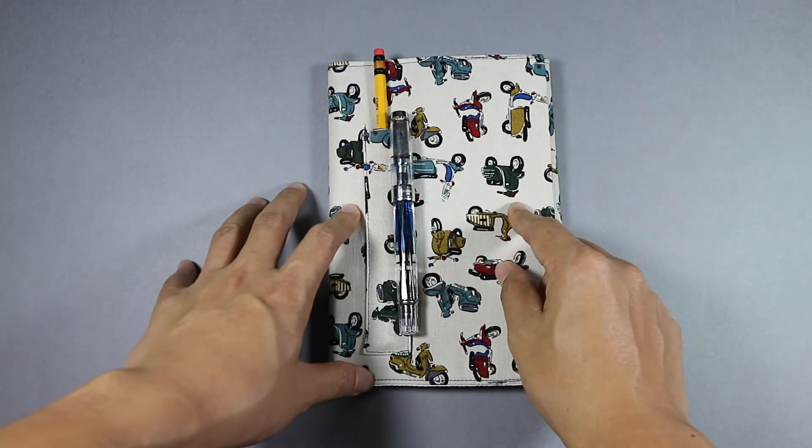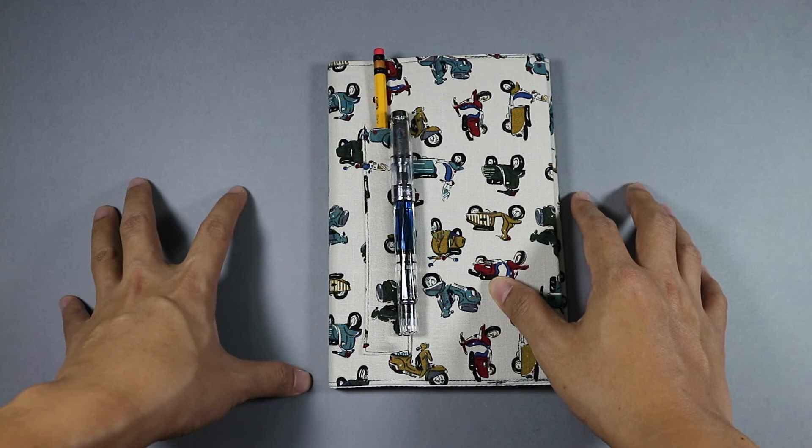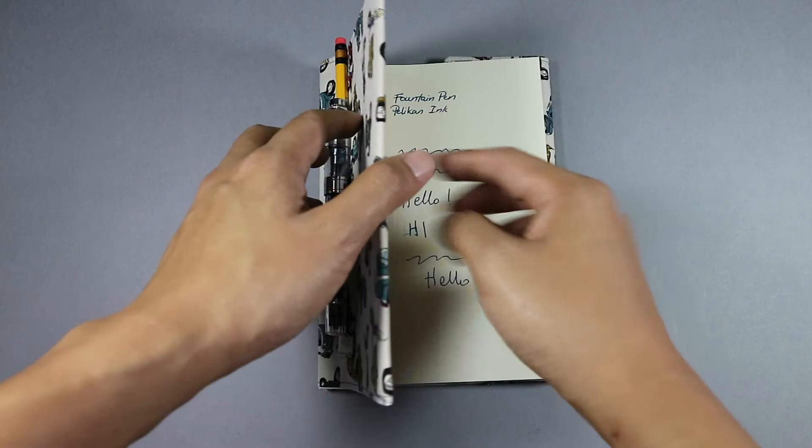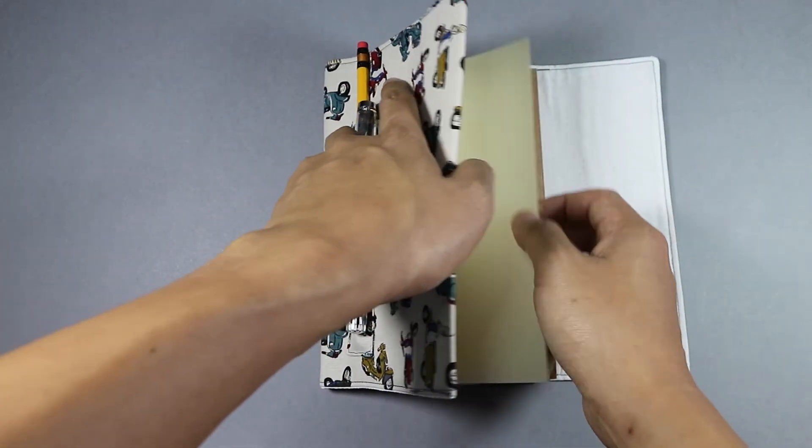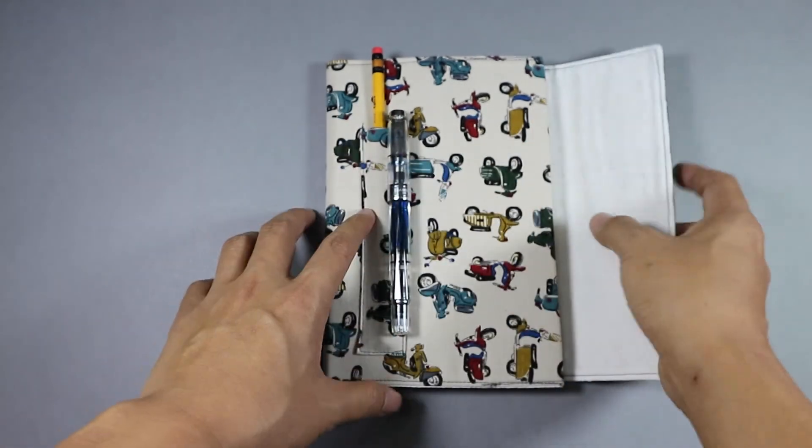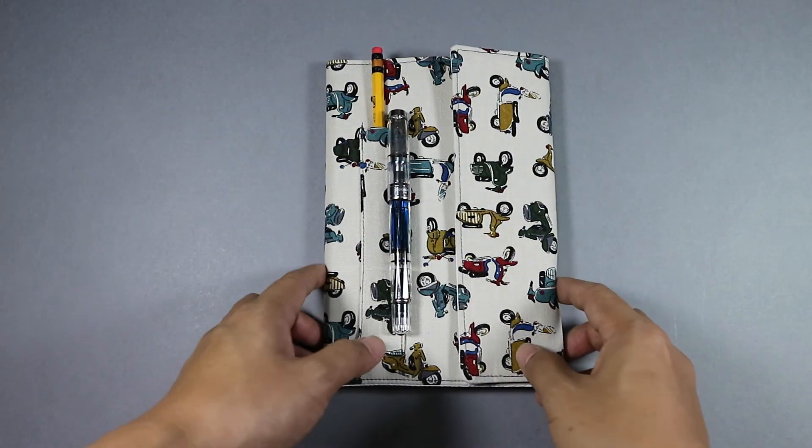It comes in 11 or 12 different designs, and you can reuse this cover once you've used up the pages of the notebook. The size is A5, so any A5 will do. You can use any A5 with this. So that's the Pinove notebook.